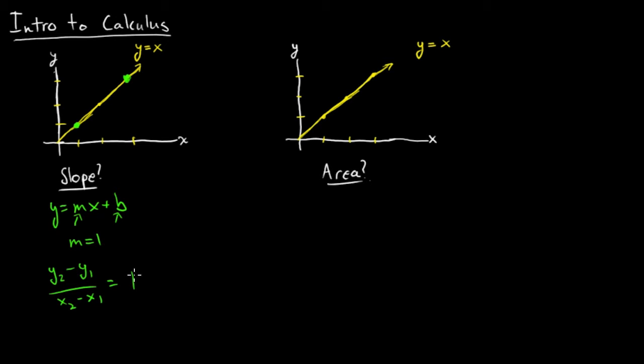Now, if we want to find the area underneath y equals x, what we want to do is use geometry to our advantage and fill in the area underneath the curve with shapes that we know we can find the area of. In this case, it should be fairly obvious that we can fill this in with a triangle and take the area of that triangle. This is pretty straightforward.